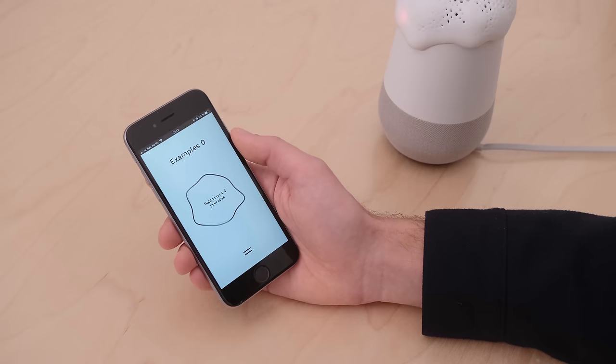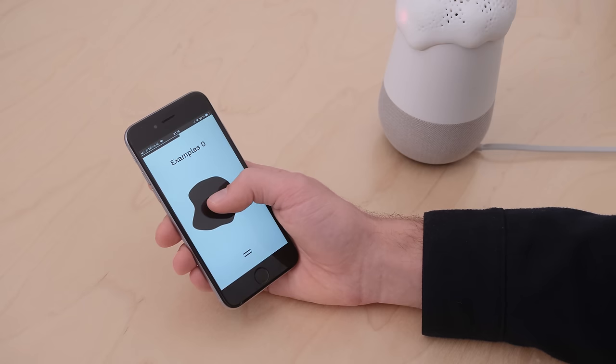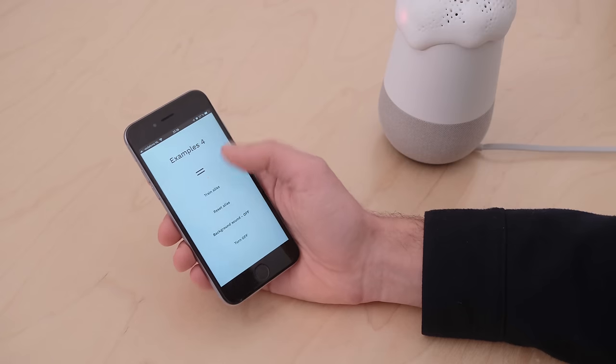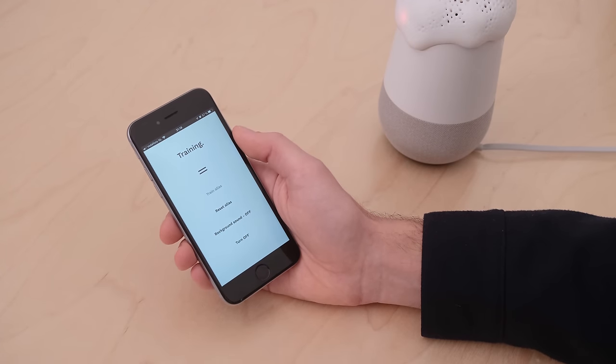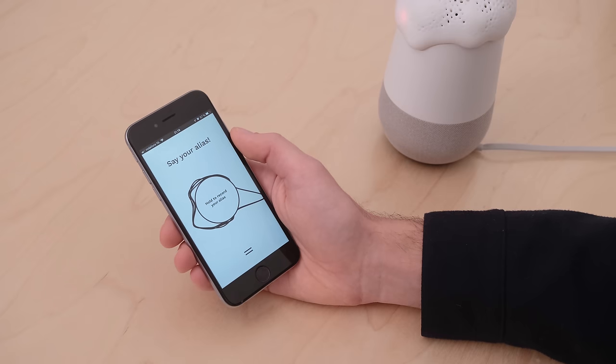To set up your alias, open the app and think of a name or even sound you want to activate your smart device with. Simply hold record while saying the new name four times. Alias, alias, alias, alias. Now press train and wait a few seconds while Alias is learning its new name. Alias, what time is it? 8:39.